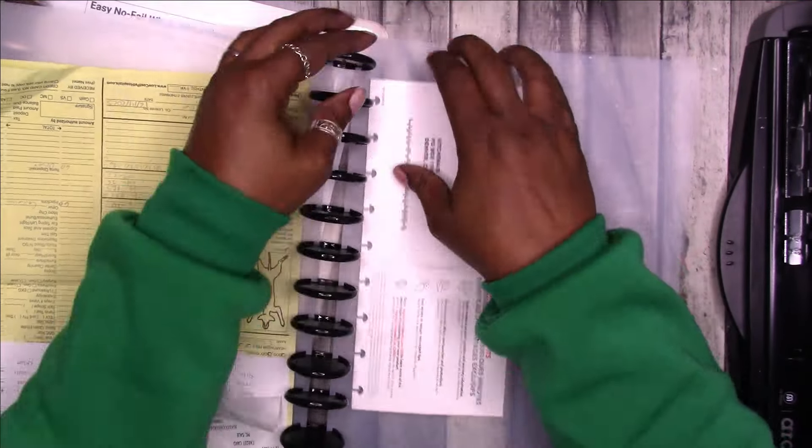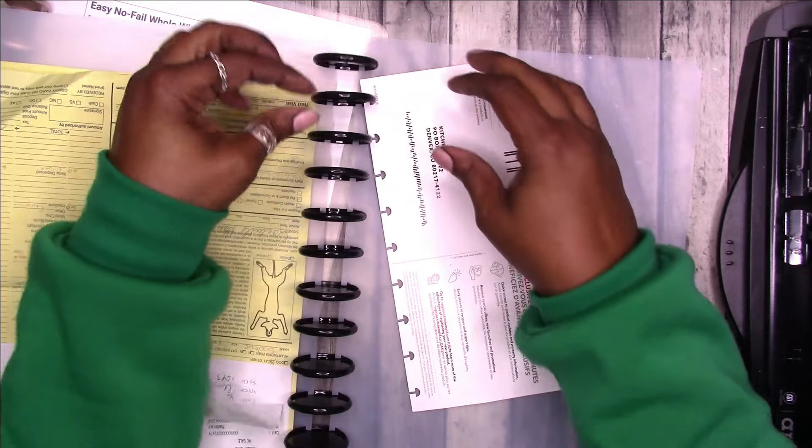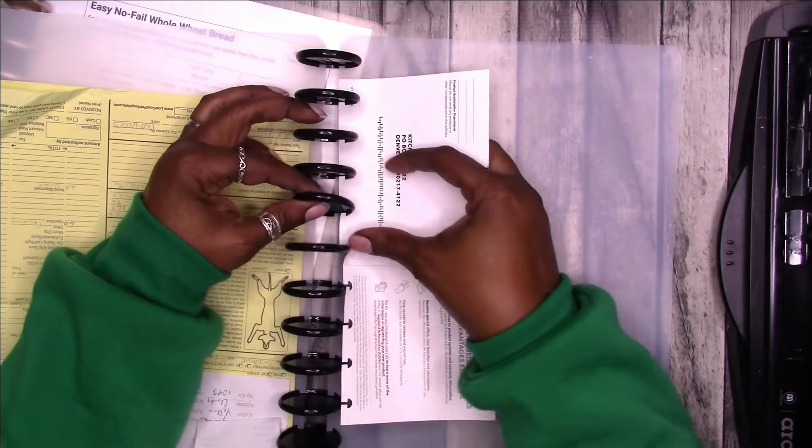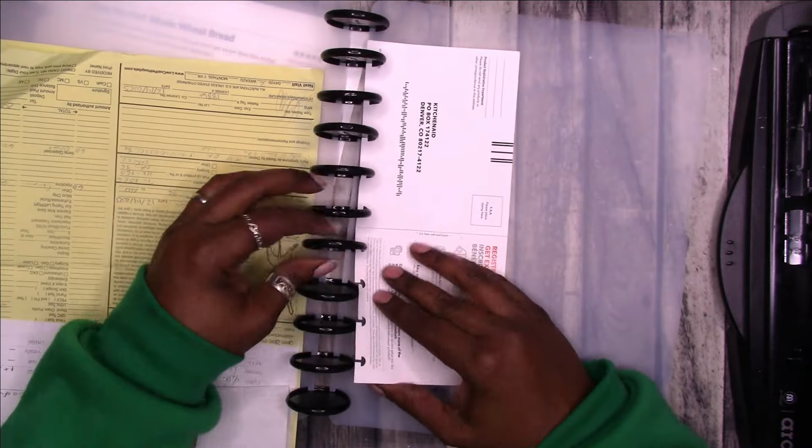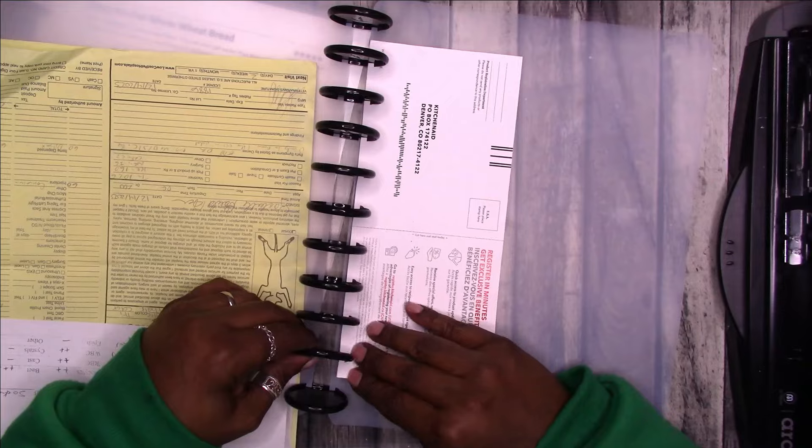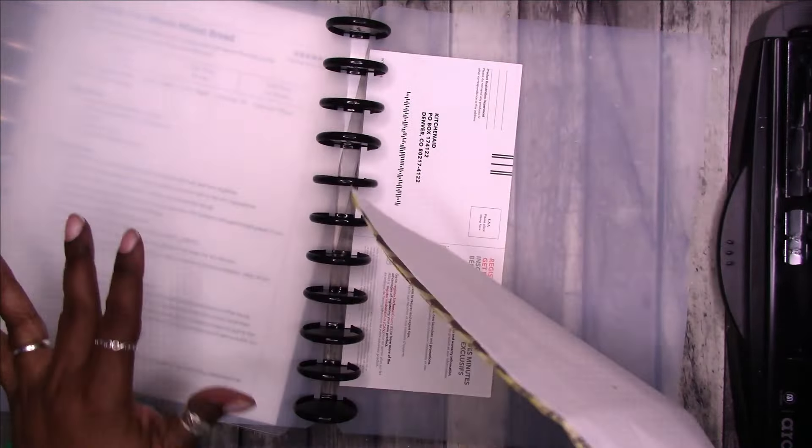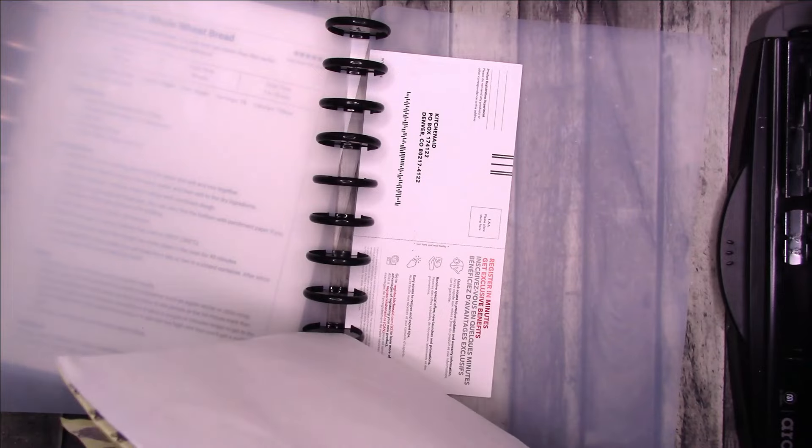So I think I'll put like, um, registrations in the back here, all the way in the back and I'll make dividers for this eventually. And then I'll put the pet stuff in front of that. And then any other home stuff will go in front of that.